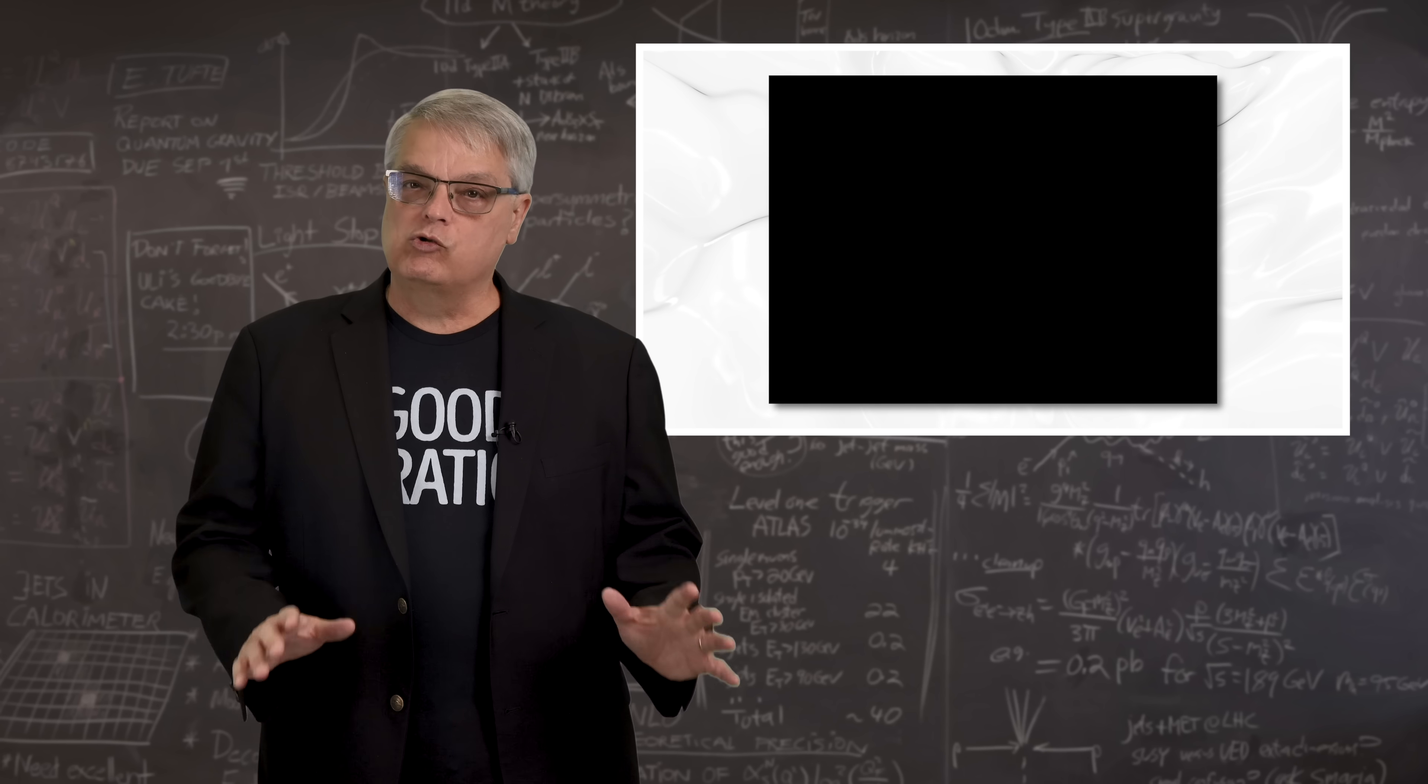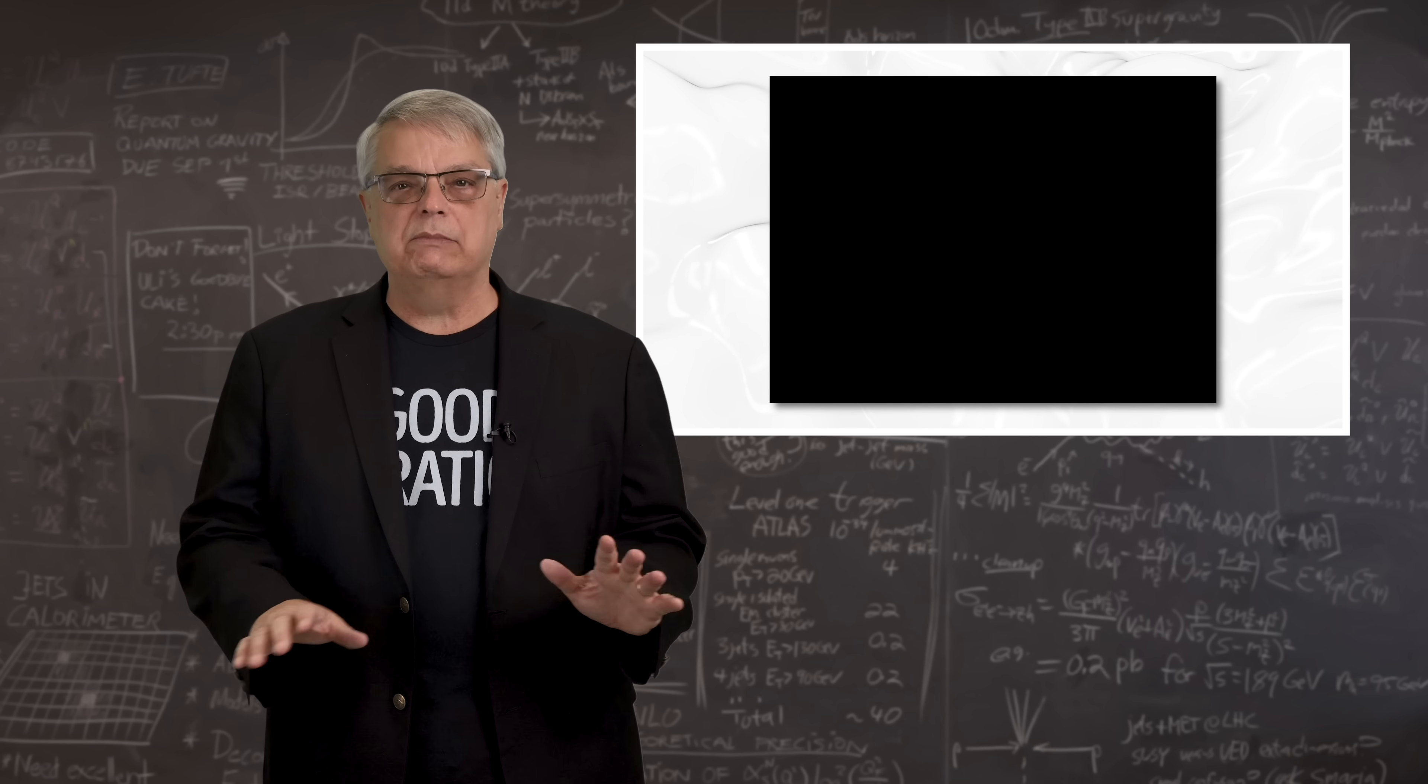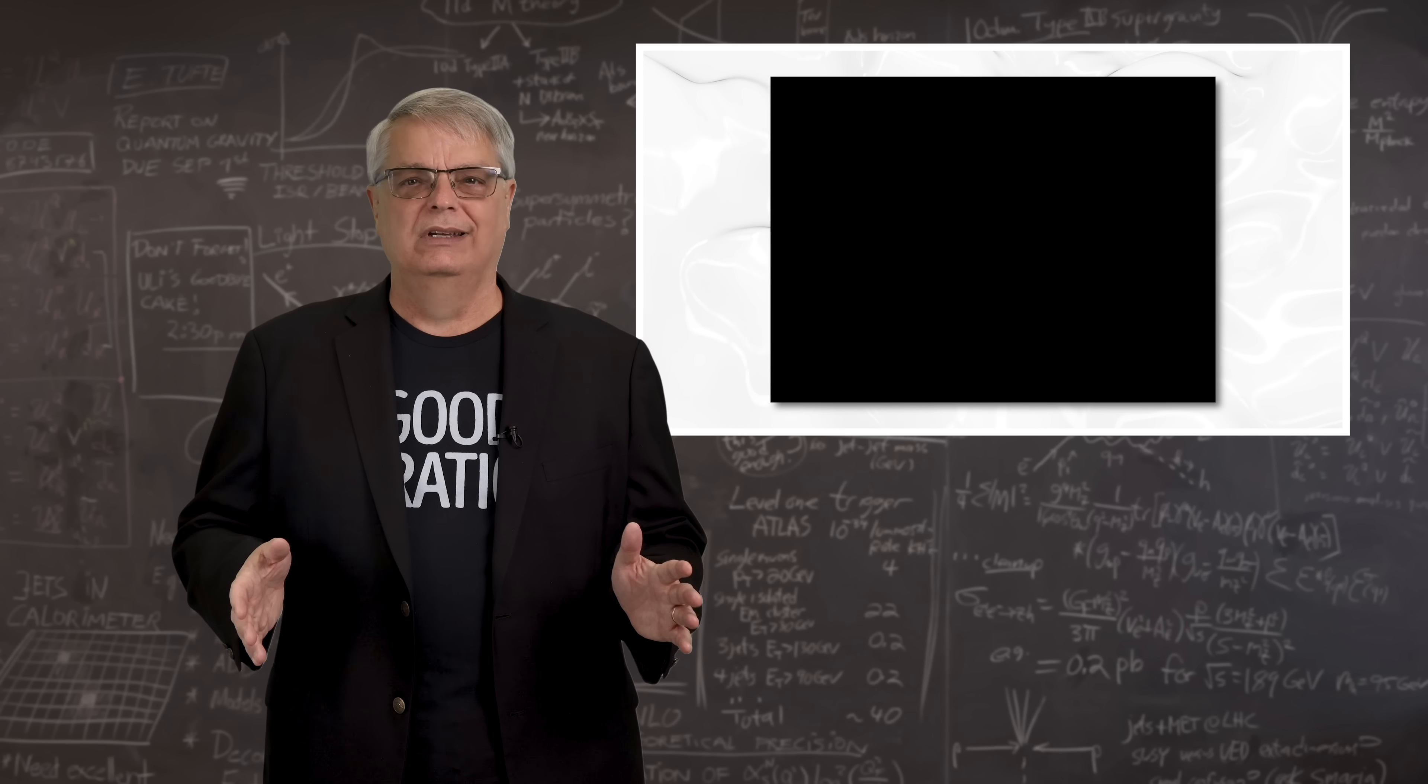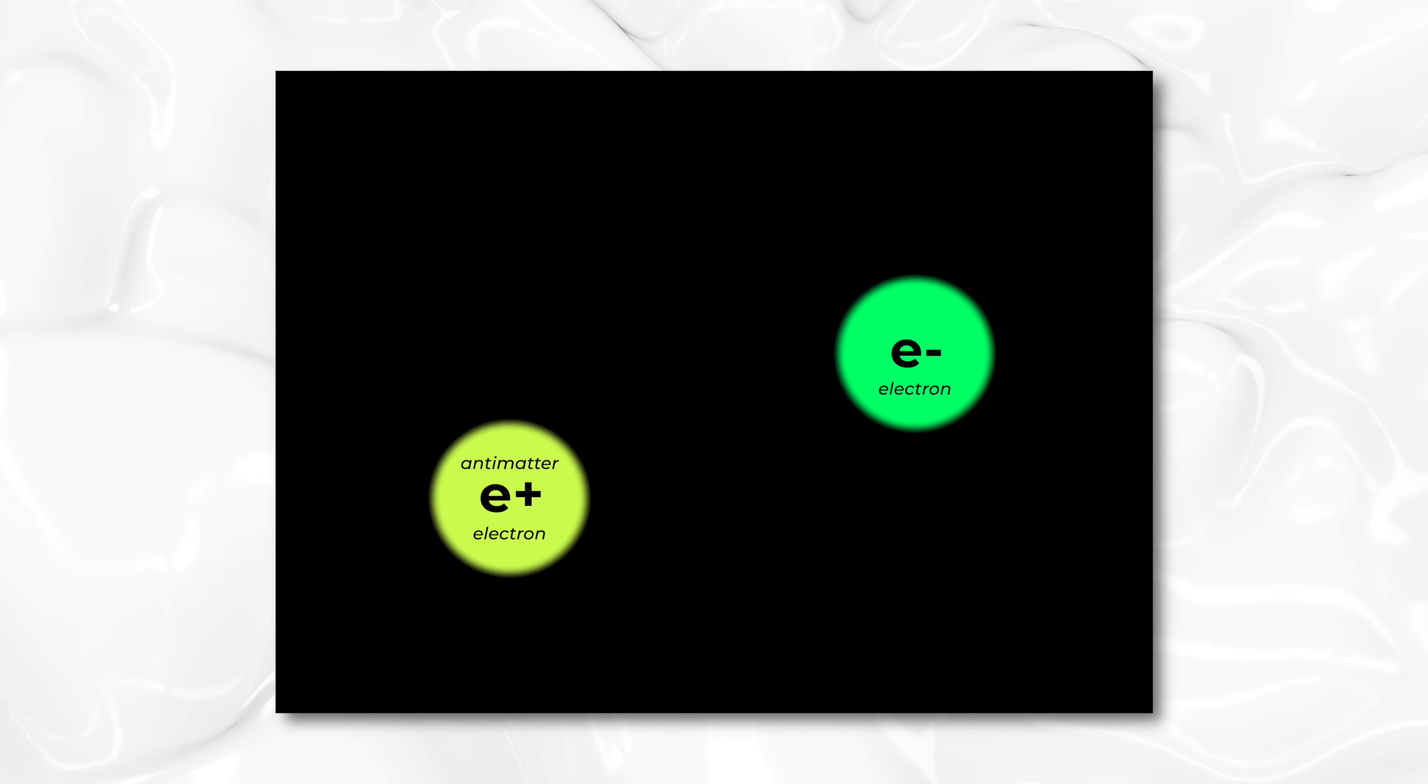We start out with a truly empty space, which includes absolutely nothing. It has zero energy. I mean, really, nothing at all. Then, according to the simple picture, from that nothing, a matter and antimatter electron appear.